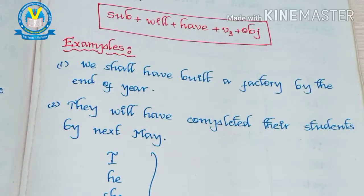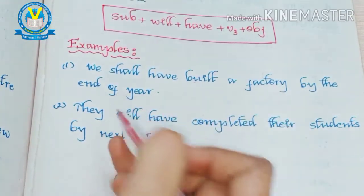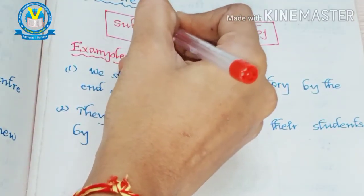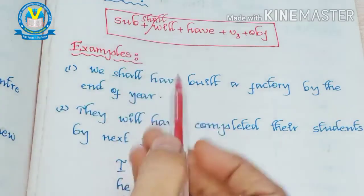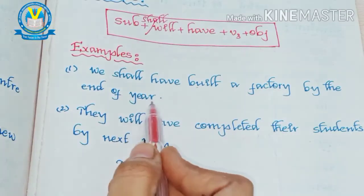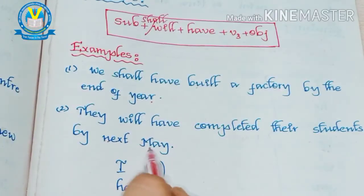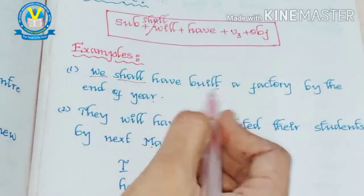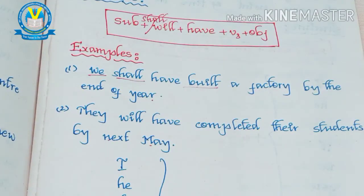Here we have some examples. Look at the picture. 'We shall have built a factory by the end of the year.' We can use 'shall' also. 'They will have completed their studies by next May.' In the first sentence: 'We' is the subject, 'shall' is the helping verb, and 'built' is the third form of the verb.